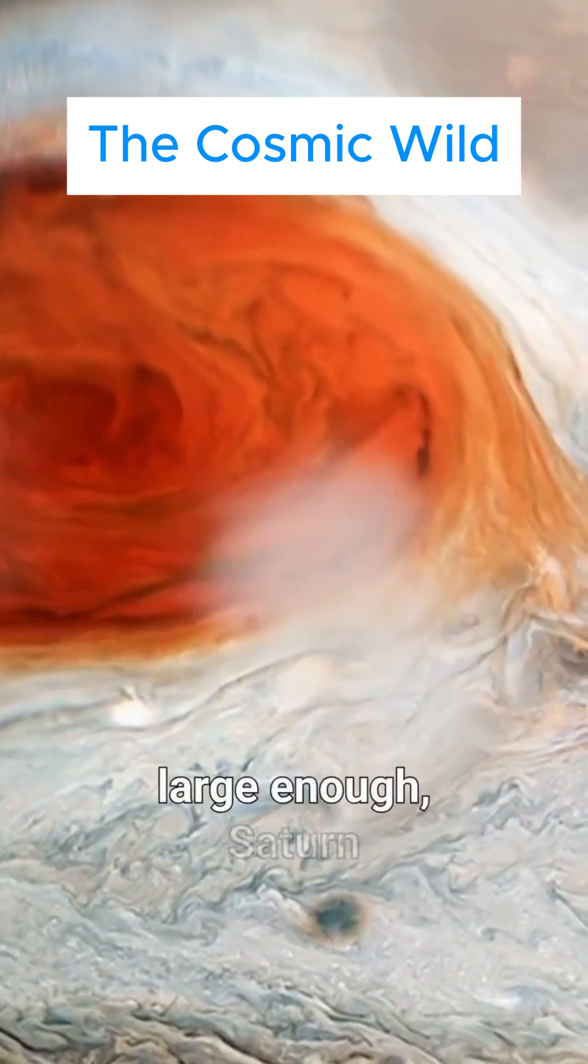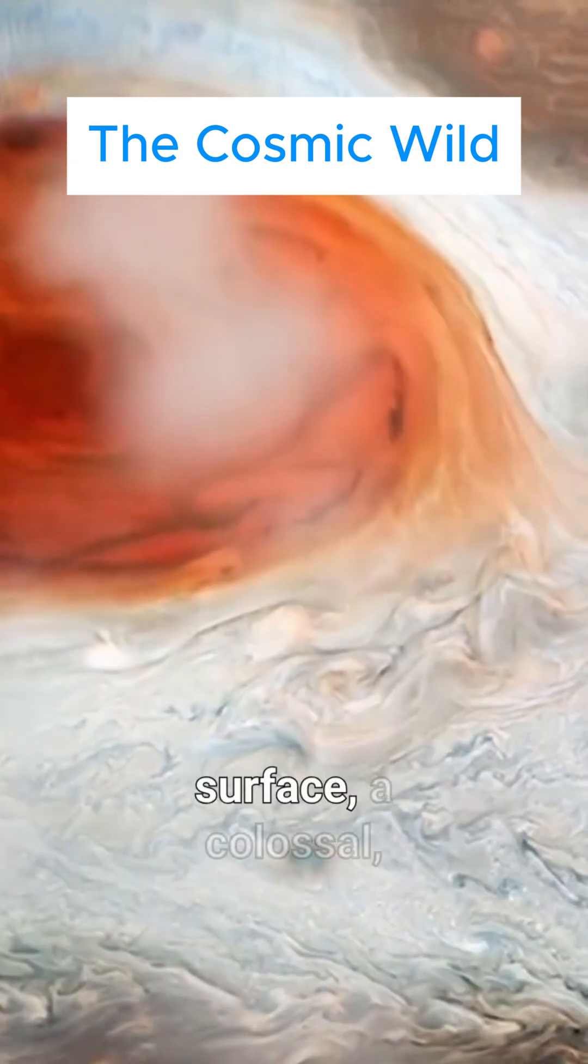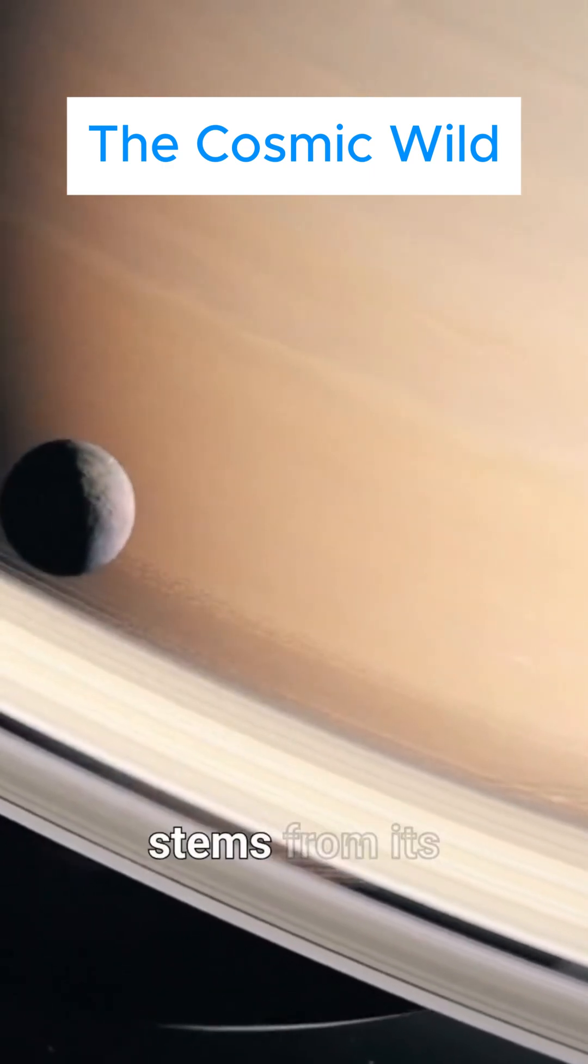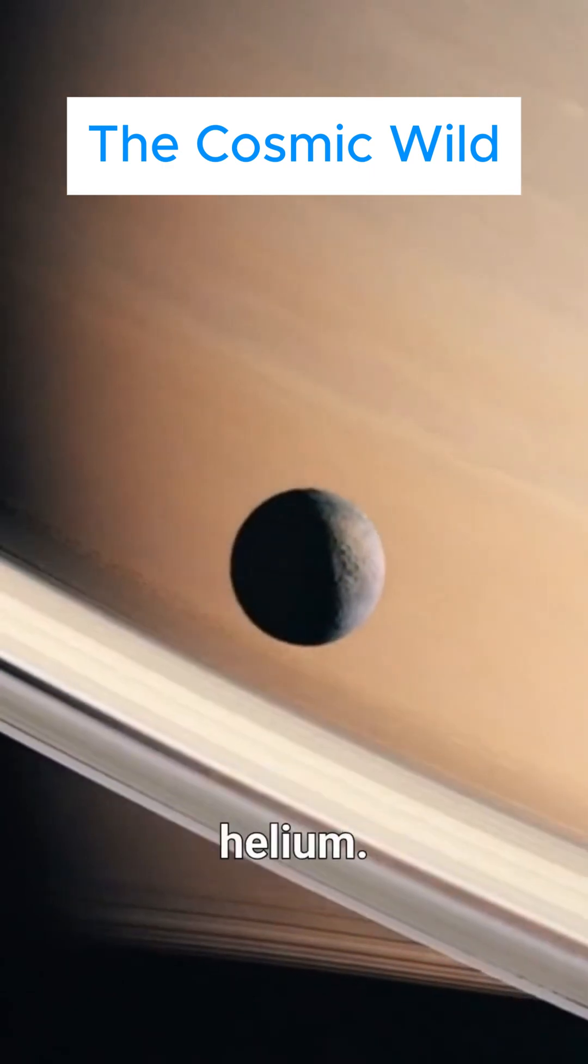If you could find a bathtub large enough, Saturn would bob on the surface, a colossal gaseous cork. This incredible fact stems from its composition, primarily hydrogen and helium.